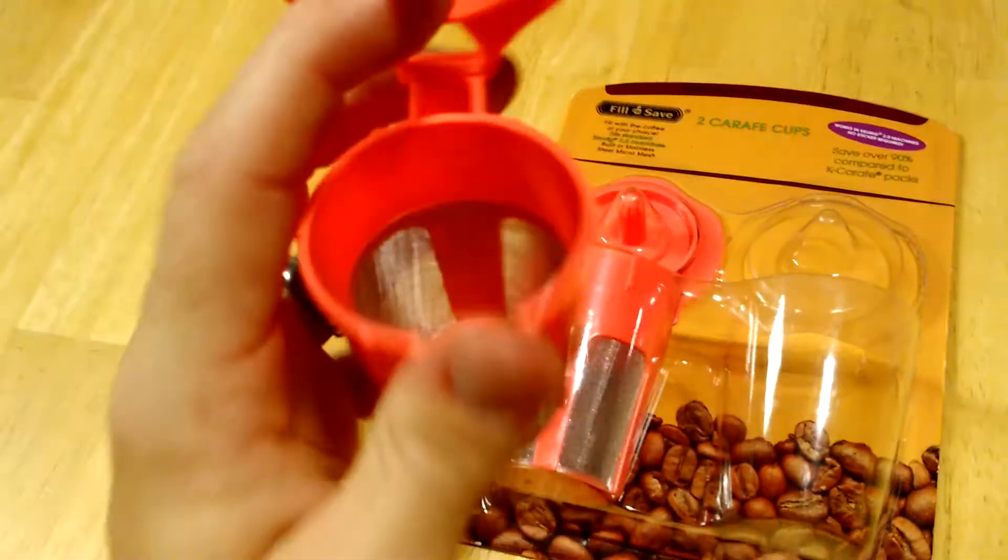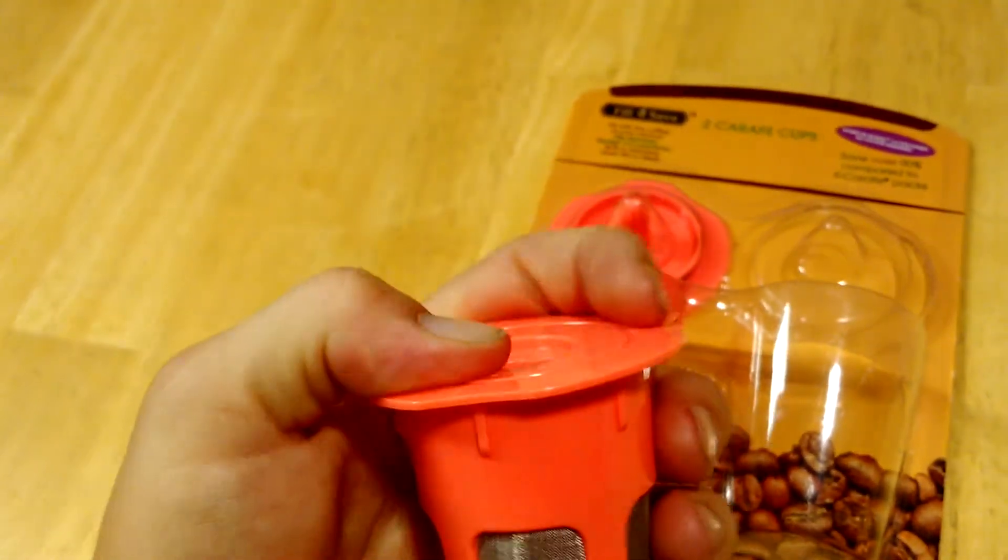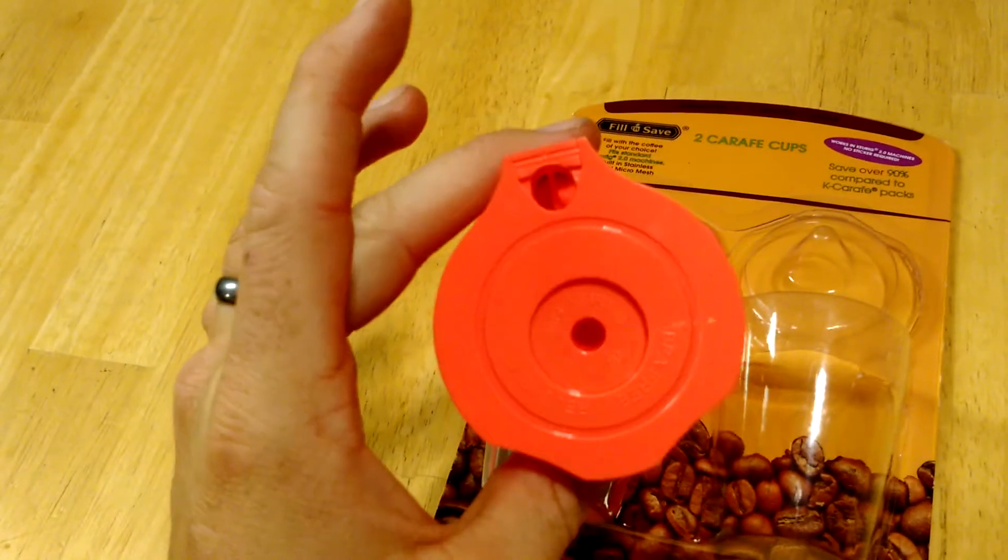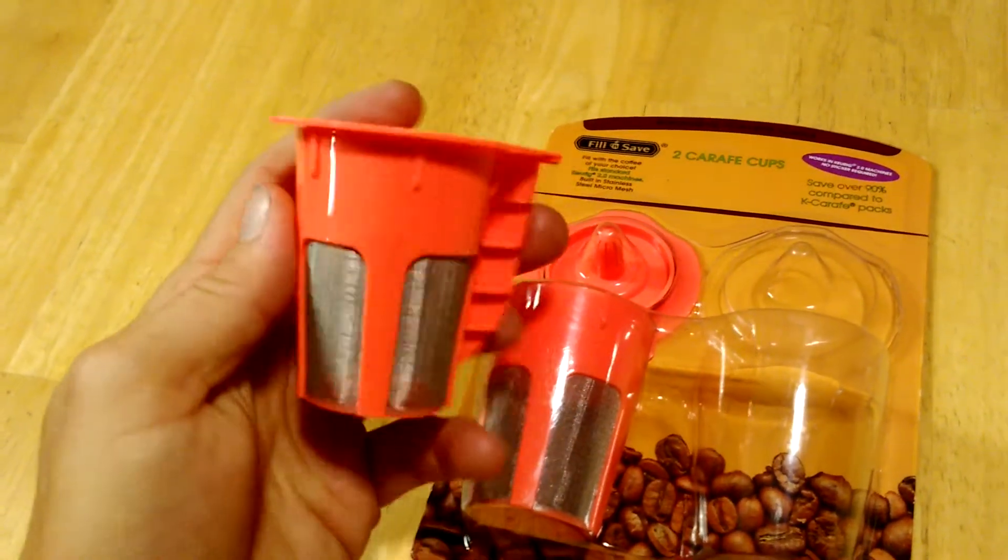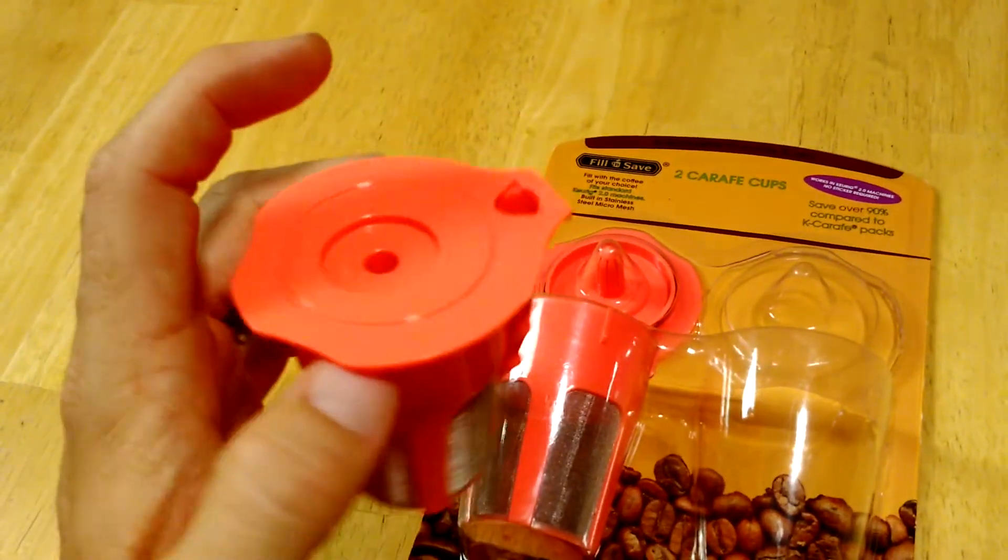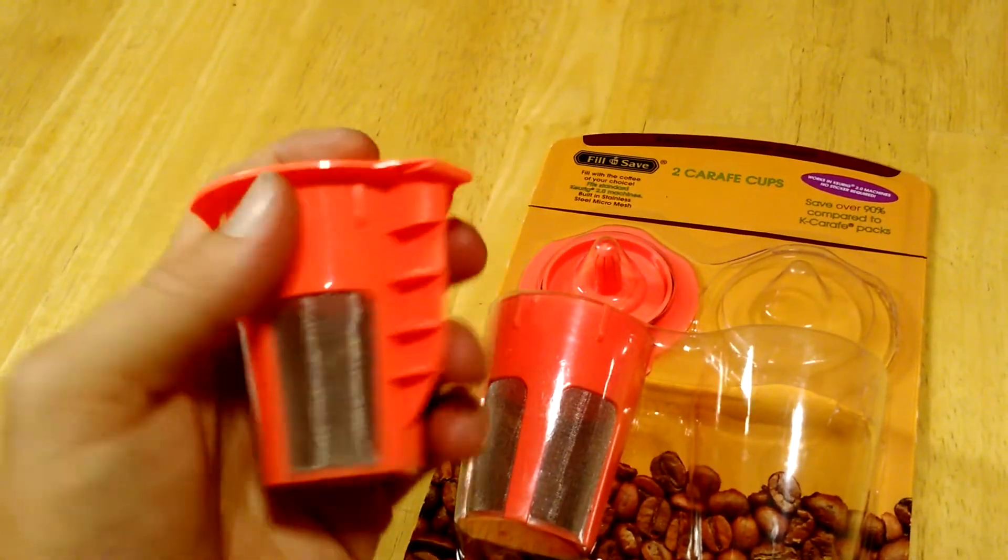So you just fill it up about 80%, close the lid, seal it, pop it into your Keurig 2.0. And this is for 2.0 systems only. You just pop it right in there and brew your coffee. You're good to go.